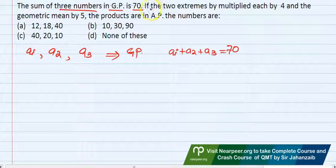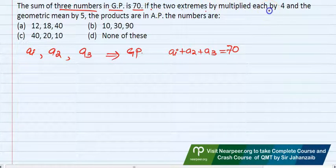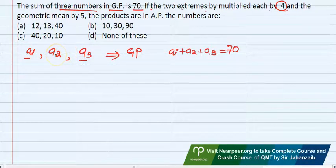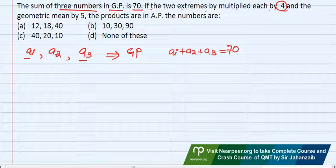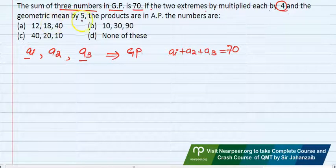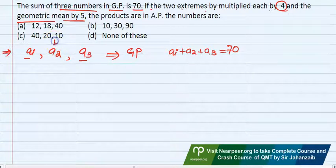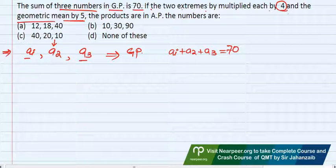Then it says if the two extremes multiplied each by four, that means the first term and third term, which are at the extremes, when we multiply them by 4, and the geometric mean, that is the center one. You know in a geometric sequence, among 3 terms the center one is called geometric mean. Similarly, in an arithmetic sequence, if you have 3 terms, the middle one is called arithmetic mean.